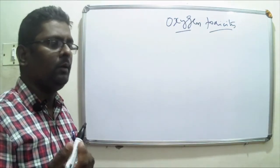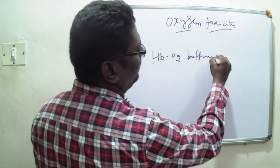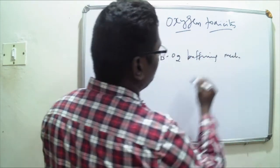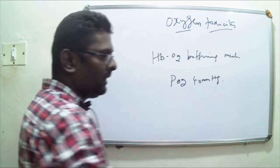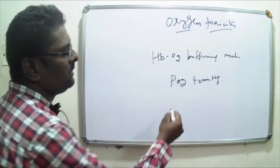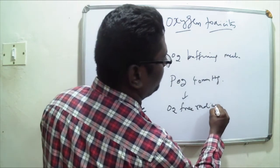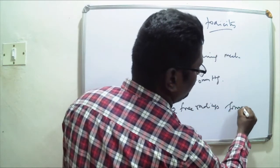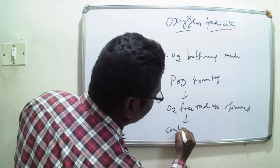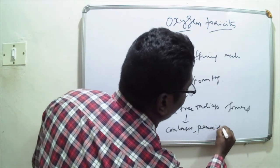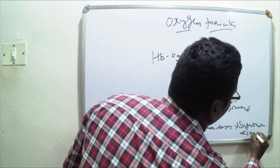Normally, the hemoglobin oxygen buffering mechanism keeps the tissue PO2 at 40 millimeters of mercury. Even at this partial pressure of oxygen in the cells, some amount of oxygen free radicals are formed, but they are removed by enzymes such as catalase, peroxidases, and superoxide dismutase.